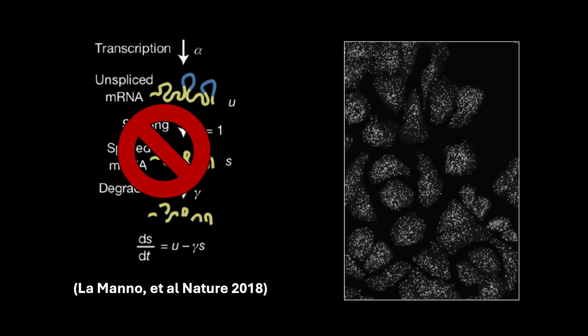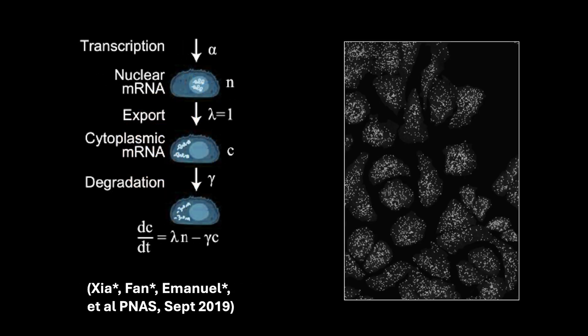In particular, following the central dogma, we can model genes as being initially transcribed in the nucleus and then exported into the cytoplasm of the cell, where they can be translated into proteins and eventually degraded. As we demonstrated in our 2019 PNAS paper from my postdoc in Xiaoyi Zhuang's lab at Harvard, we predict the future gene expression state of cells by modeling RNA velocity based on the ratio of nuclear to cytoplasmic mRNAs, which can be readily inferred from spatially resolved transcriptomic imaging data, in particular MERFISH.